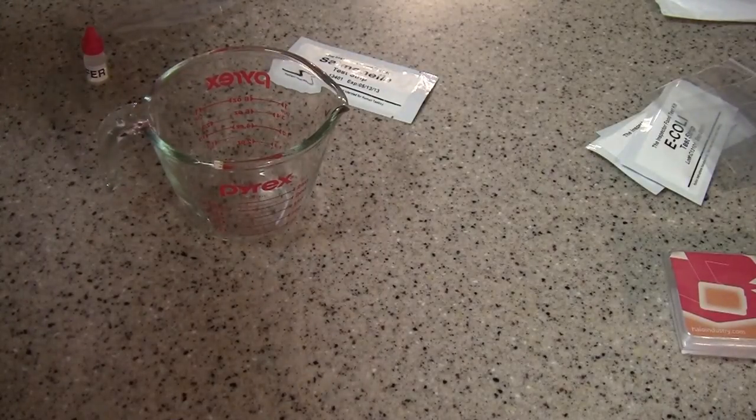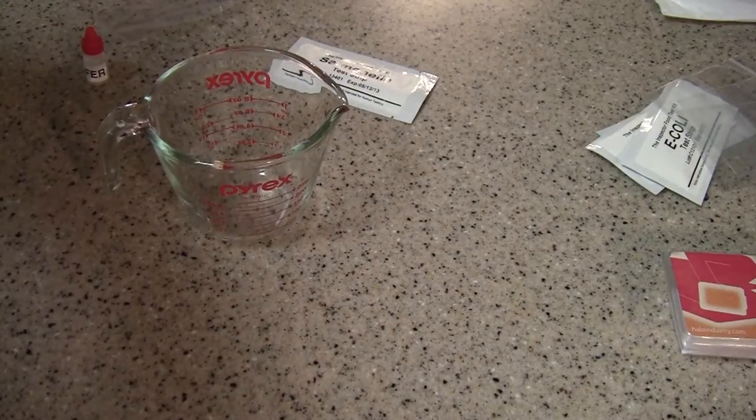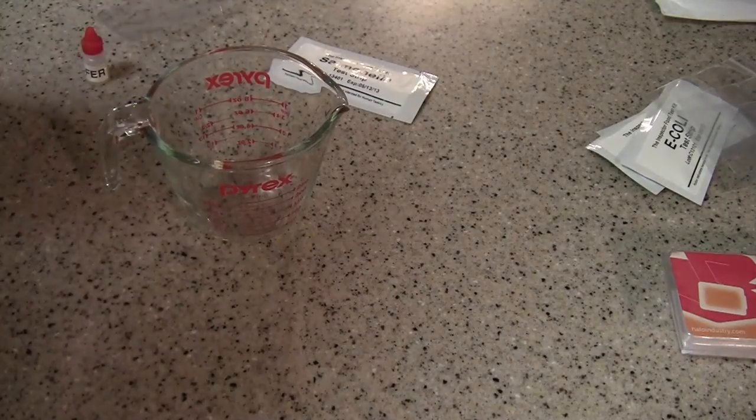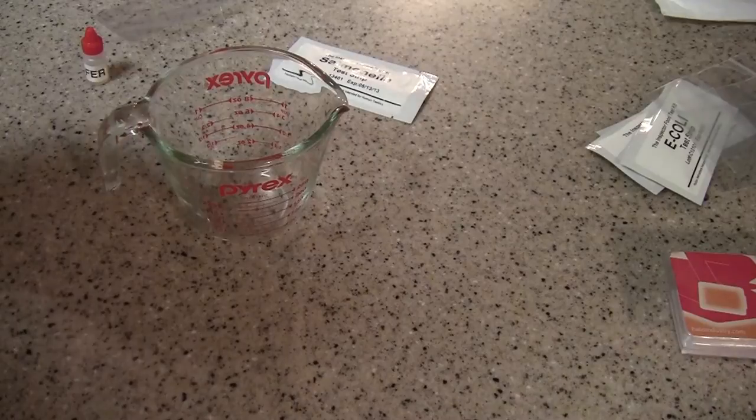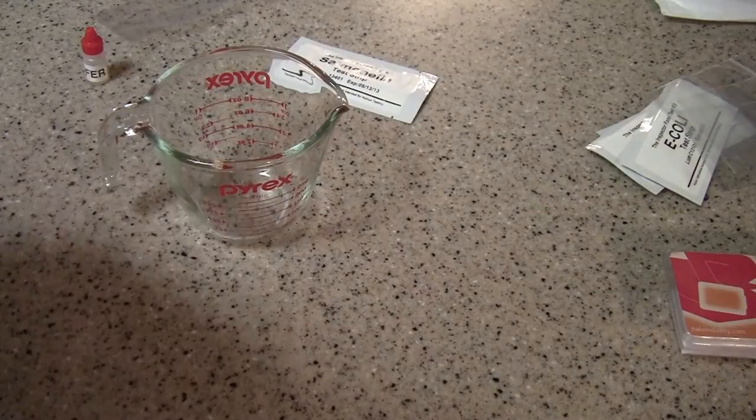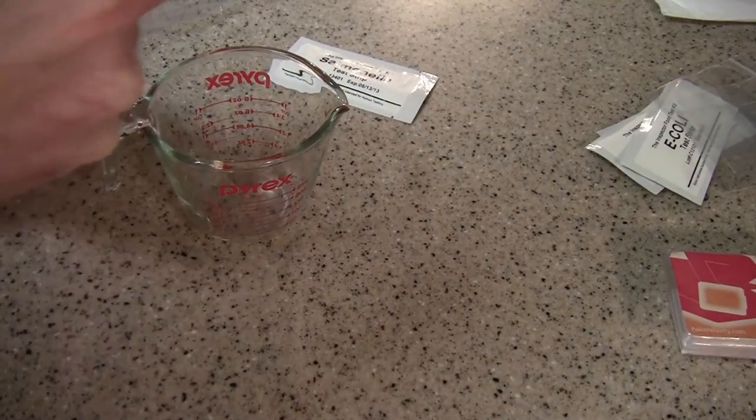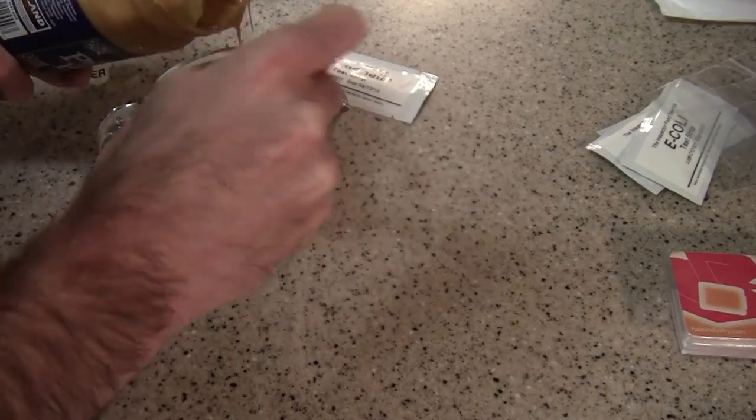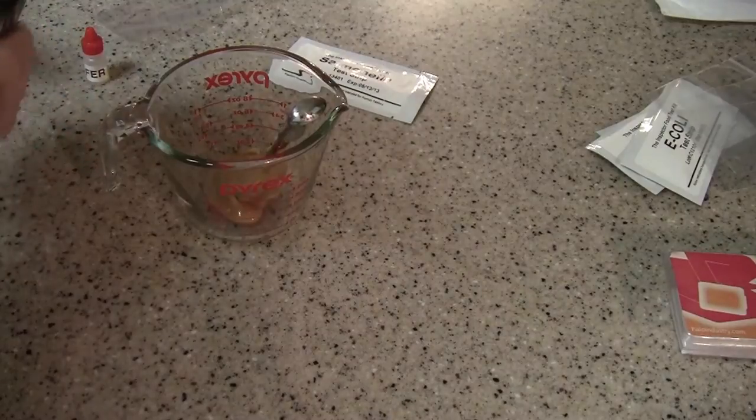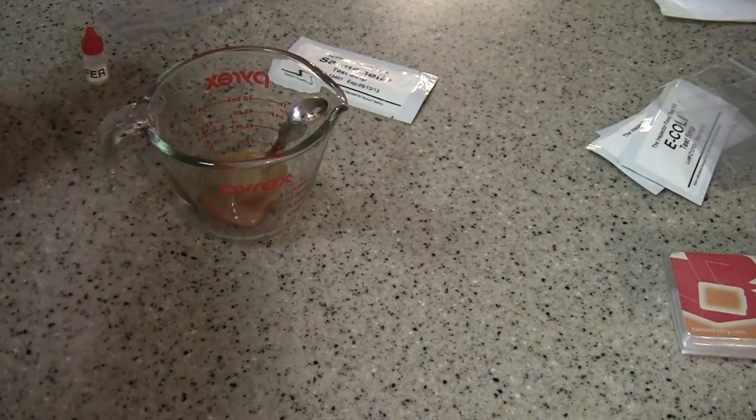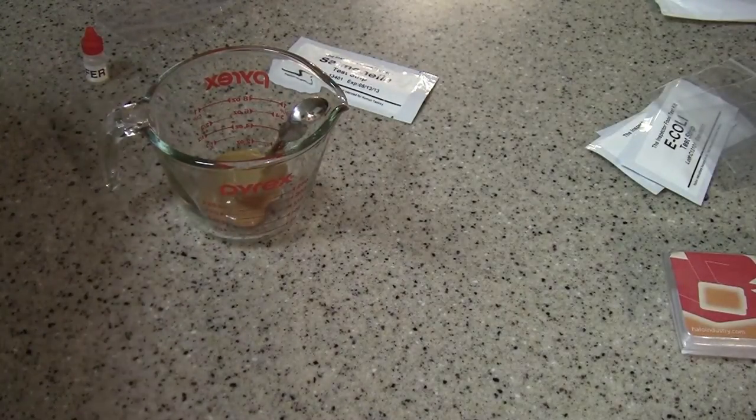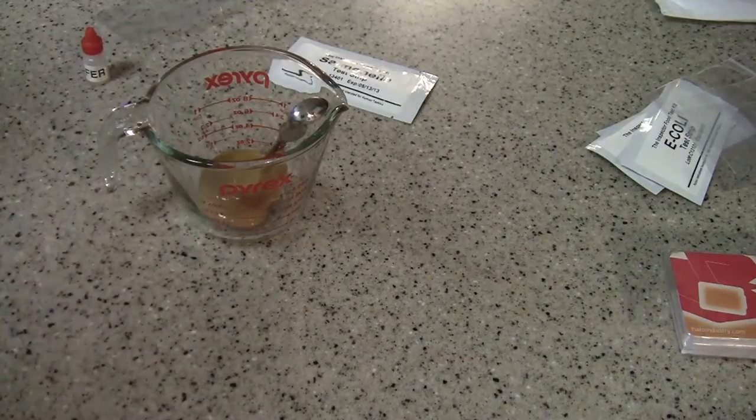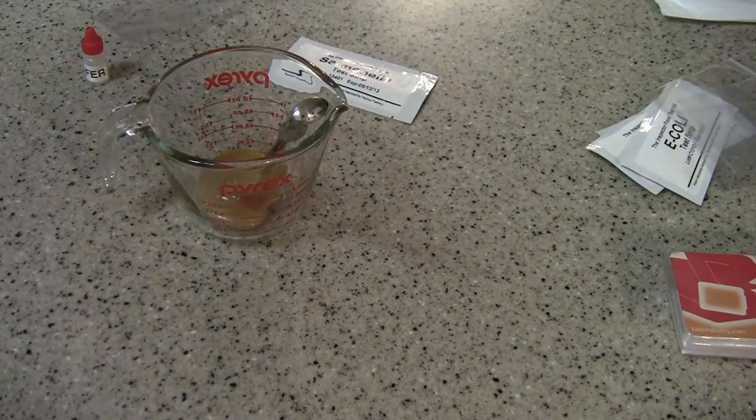And what you do is you have to make a solution. The instructions recommend, if you're testing a piece of fruit, for example, that you wash the fruit in water and then you retain that water and that solution is used to test for E. coli or salmonella. Now with peanut butter, that seems a little bit different because obviously you can't wash peanut butter. So what I'm going to do is I'm going to put a fair amount in this Pyrex measuring glass.